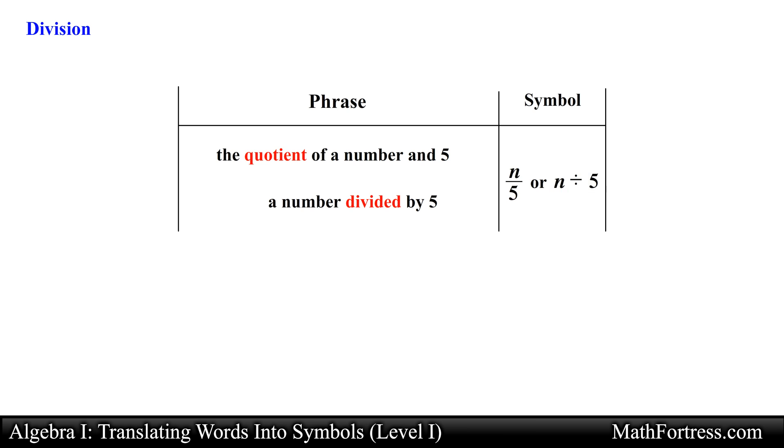At times a phrase can have more than one mathematical operation such as the phrase 5 less than half of x. Here we have a difference because of the key word less and we have a multiplication because we are taking a fraction apart of a number. This expression can also be simplified as follows.